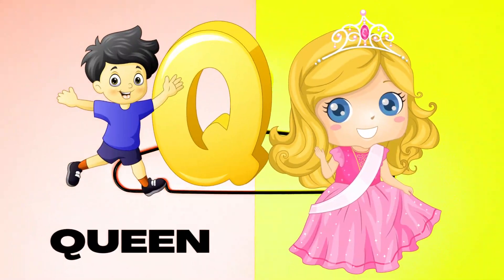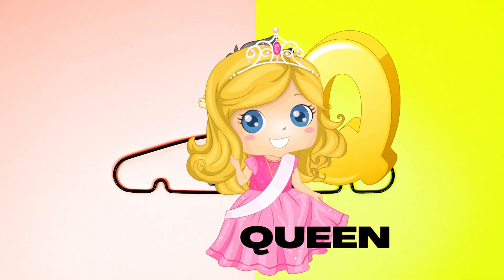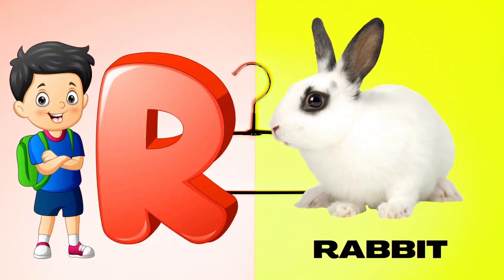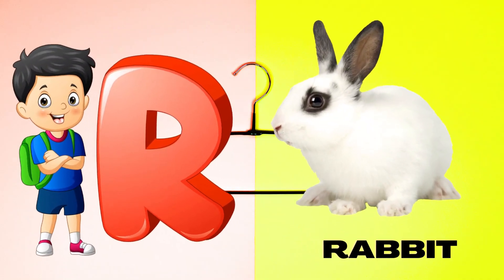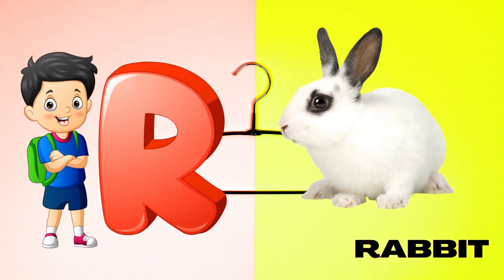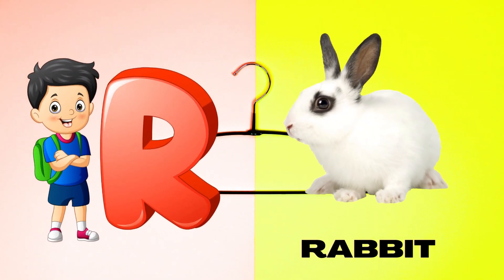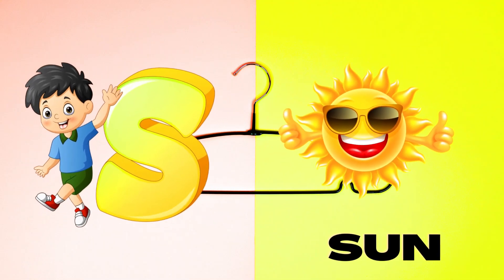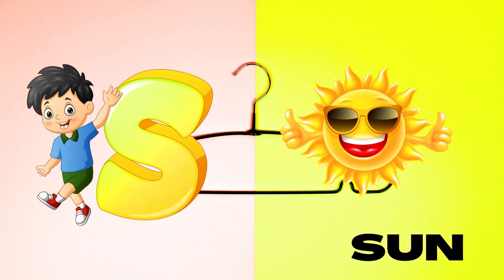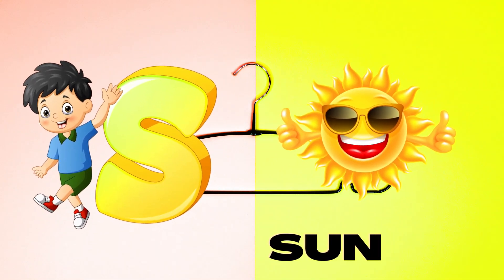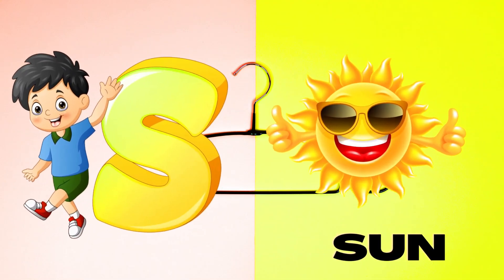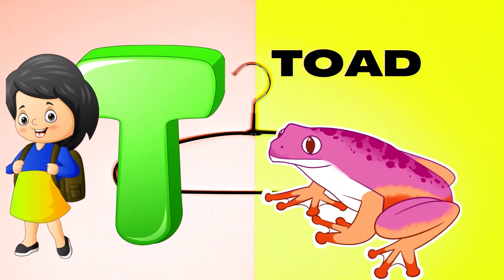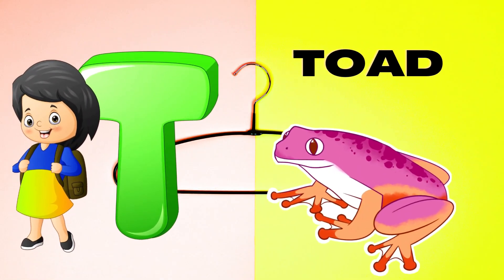Q is for Queen, Q-Q-Queen. R is for Rabbit, R-R-Rabbit. S is for Sun, S-S-Sun. T is for Toad, T-T-Toad.